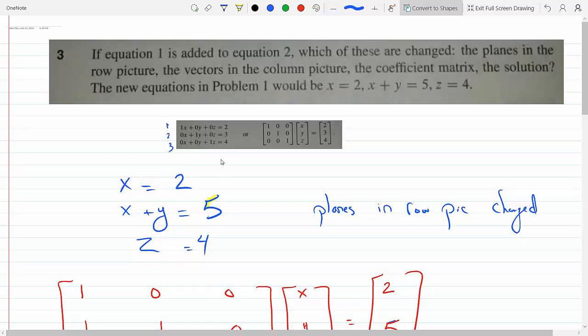Okay, so now if I add equation 1 with equation 2, equation 1 remains x equal 2. Equation 2 becomes x plus y equals 5, since 1x plus x is x, 0y plus 1y is y, there is no z, and 2 plus 3 is 5. And the last equation remains z equal 4.